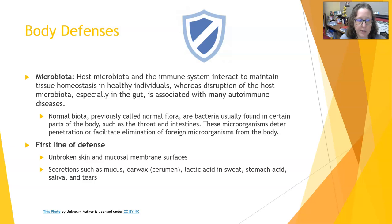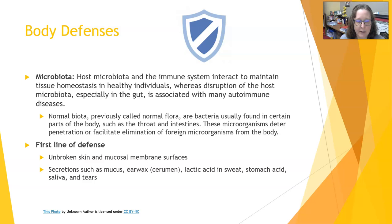The first line of defense is unbroken skin and unbroken mucosal membrane surfaces. This covers where you interface with the outside, and as long as that is intact, it keeps bacteria, viruses, and other things from entering your body. In addition to unbroken surfaces, you also have secretions such as mucus, earwax (cerumen), lactic acid, sweat, stomach acid, saliva, and tears — all of which work with unbroken skin and mucous membranes to keep pathogens at bay.